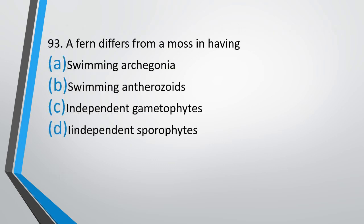Question number 93. A fern differs from a moss in having: option A — swimming archegonia, option B — swimming antherozoids, option C — independent gametophyte, or option D — independent sporophyte? The correct answer is option D, independent sporophyte.